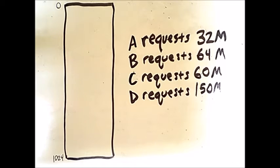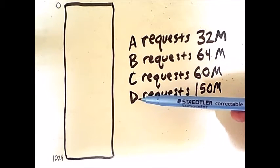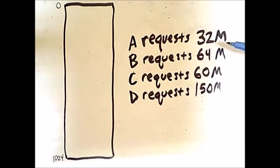Let's see how the buddy system works with an example. Here are several memory requests by processes A through D for memory chunks of the sizes shown here. The total size of memory is 1024 megabytes, which is appropriate because every partition size in the buddy system must be a power of 2, and 1024 is 2 to the 10.